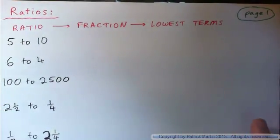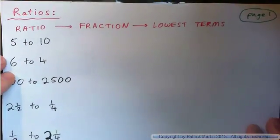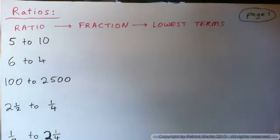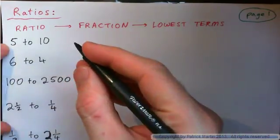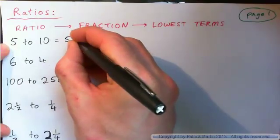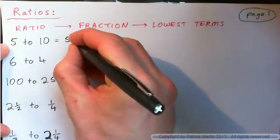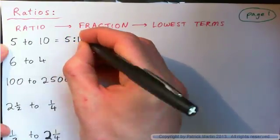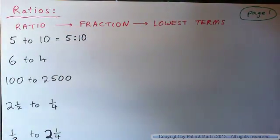A ratio can be written with the word 'to'. It can also be written as a fraction. There's another way of writing a ratio: 5 to 10 can be written like this — 5 with a colon, 10. That's another way of writing a ratio.